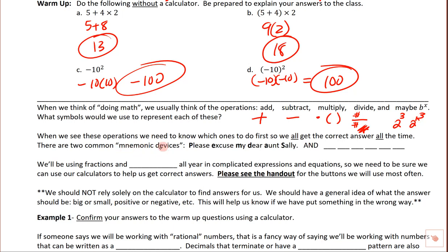There are two common mnemonic devices: the phrase 'Please Excuse My Dear Aunt Sally,' and the acronym PEMDAS — Parentheses, Exponents, Multiplication and Division, then Addition and Subtraction. Multiplication is not more important than division just because it comes first in the acronym; we do multiplication and division in the order we come to them from left to right. The same applies to addition and subtraction — left to right.